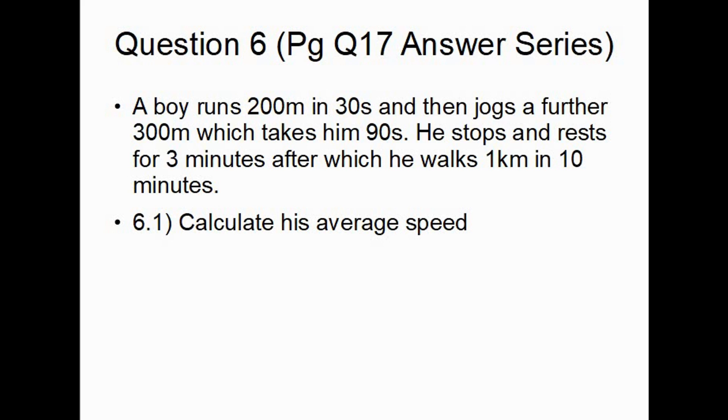So this question: a boy runs 200 meters in 30 seconds, then he jogs a further 300 meters which takes him 90 seconds. He stops, rests for 3 minutes, after which he walks 1 kilometer in 10 minutes. This question asks you to calculate the average speed. Now what do we do with all this information? Well, we know average speed is total distance divided by time. So the first thing we do is we put a formula. So we know that the average speed is his total distance divided by the time taken, total time.